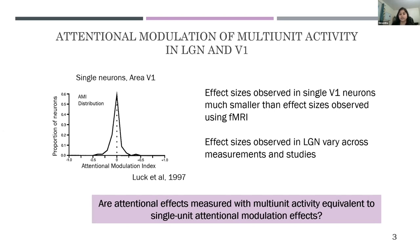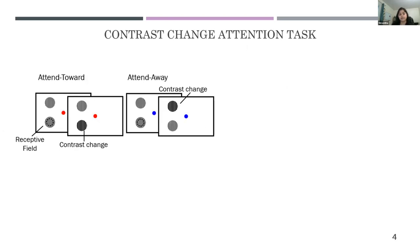The question we pose is whether attentional effects measured with multi-unit activity are equivalent to single-unit attentional modulation. To study this, we had monkeys perform a contrast change attention task. The monkey fixates at a central dot whose color cues where the monkey should attend. The red color, for example, indicates the monkey should attend to the lower drifting grating, which overlaps the receptive field of the attended location. In attend-away trials, the monkey attends to the upper drifting grating outside the receptive field. At the end of the stimulus display, the contrast changes at the cued location and the monkey reports that change.